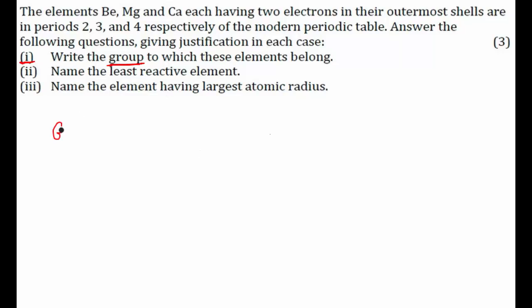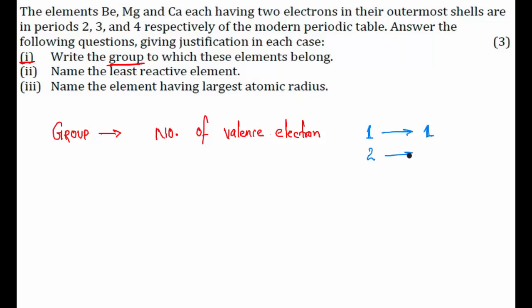To find the group of any element, first you have to find the number of valence electrons. If the number of valence electrons is one or two, your group number equals exactly the number of valence electrons. But if it is greater than two — three, four, or up to eight — you have to add 10 to find the group number. For example, if the valence electron is three, the group number is 10 + 3 = 13.